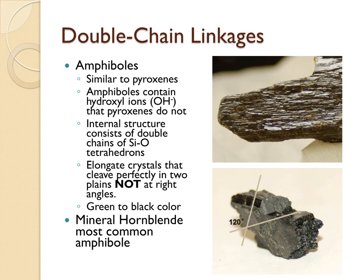Compare that to double-chain linkages of tetrahedrons, commonly called the amphiboles. They also are black to dark green in color and look very similar to pyroxenes. The main difference is that these are elongate crystals that do not cleave at right angles — instead they cleave at 120 or 60 degree angles. The most common amphibole is a mineral called hornblende, which is found commonly in granite.